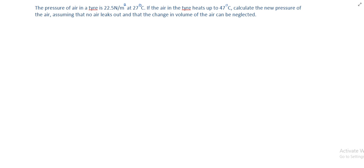So the first thing we will do is bring the parameters given in the question. We are given that the pressure of air in the tire is 22.5. So P1, the initial pressure, is 22.5 newton per meter squared at 27 degrees Celsius, which is the initial temperature of the air in the tire.